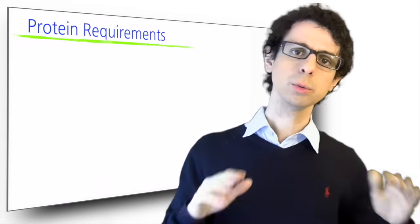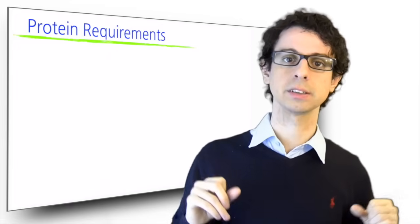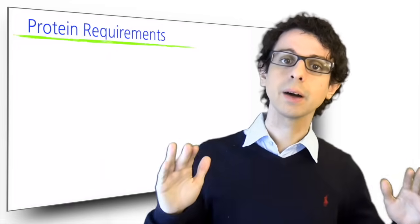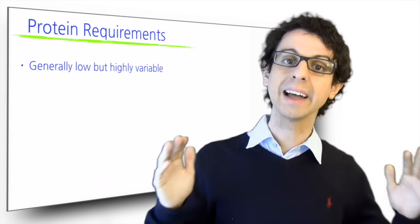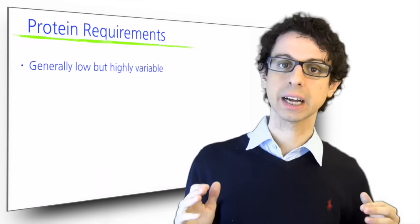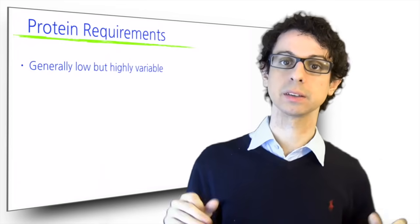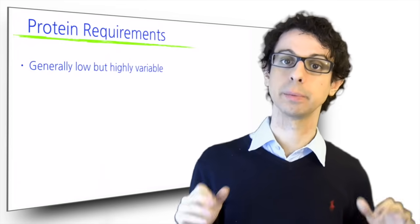So based on this calculation, which is not easy by the way, but we're not discussing this here, we find out that our protein requirement is generally low, but also highly variable. The average adult needs 0.5 grams of proteins per kilogram of body weight per day.